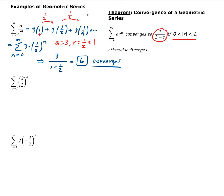For the next one, we have the summation of 3 halves, all raised to the n power, going from 0 to infinity. That's different from the first one, where we had 3 divided by 2 to the n. This series has a slightly different behavior.